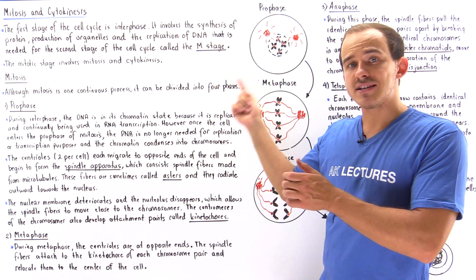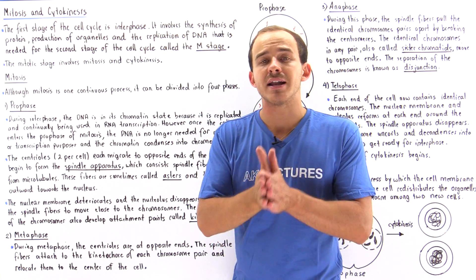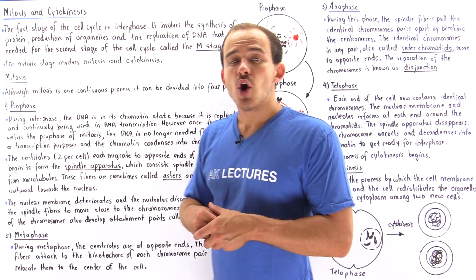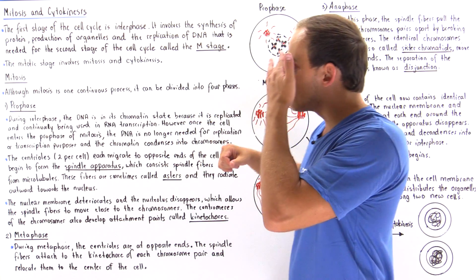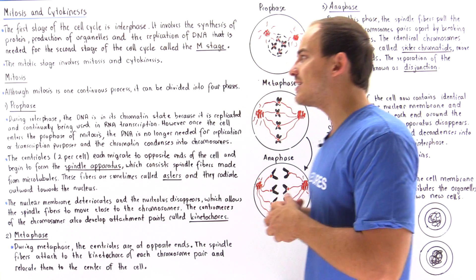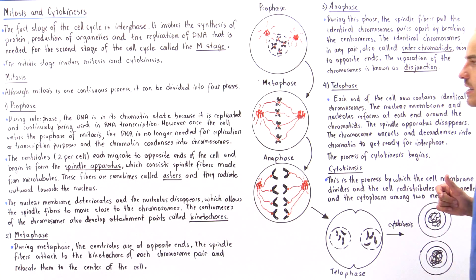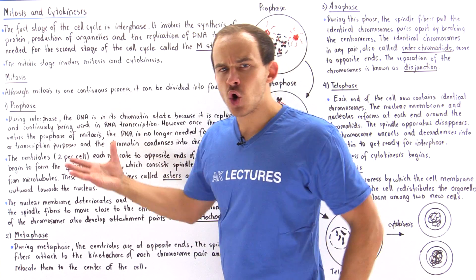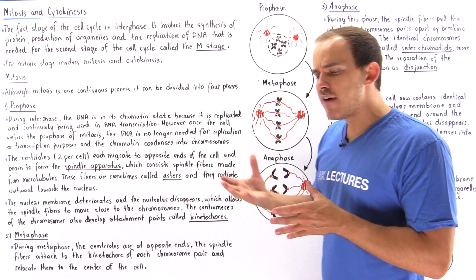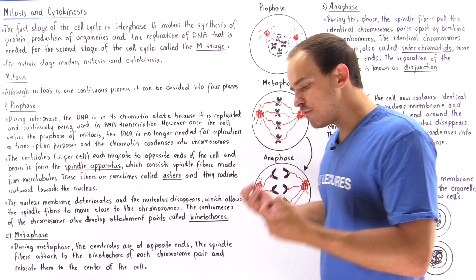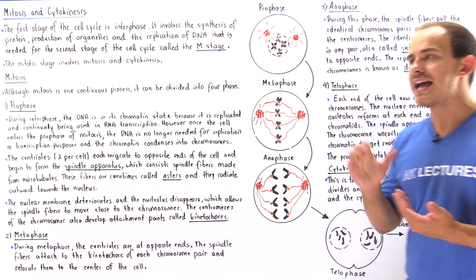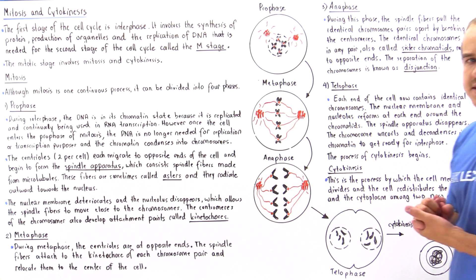The second stage is known as the M stage or the mitotic stage. The mitotic stage consists of two processes: mitosis and cytokinesis, which are interconnected. Although mitosis is one continuous process, we usually divide it into four individual phases: prophase, metaphase, anaphase, and telophase, and then we have cytokinesis.